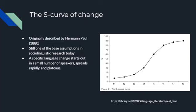The S-curve of change was originally described by Hermann Paul, one of the neogrammarians, in 1880, and it is still one of the base assumptions in sociolinguistic research today. A specific language change starts out in a small number of speakers, spreads over time, at some point spikes, and then plateaus.